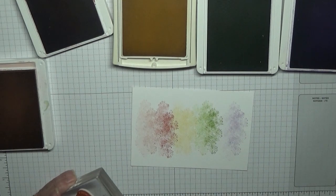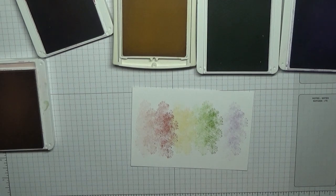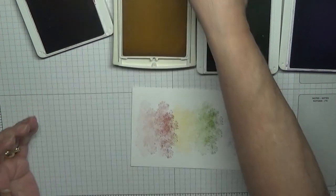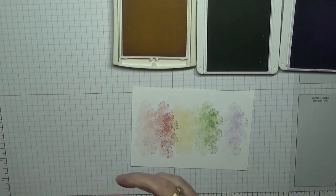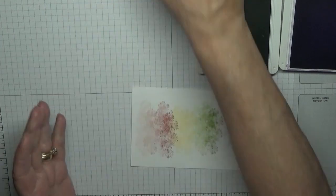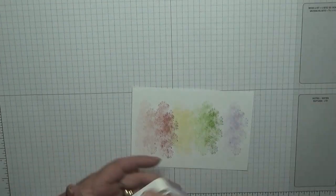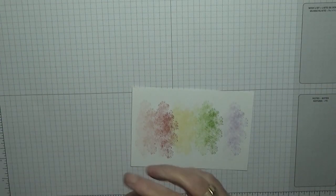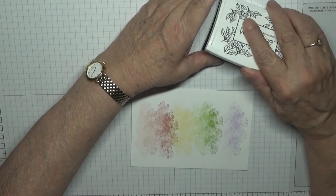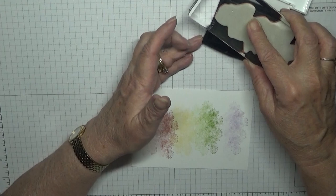Now we have all our rainbow colors. So close these up and we'll grab our black and our birds. Just ink them up.